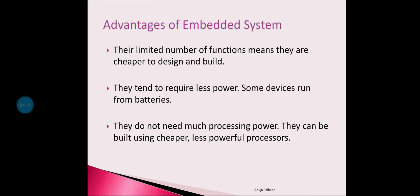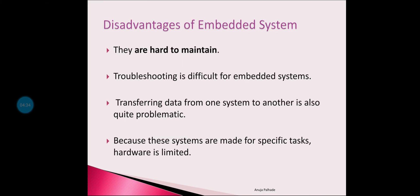Additional advantages include: embedded sensor systems have a limited number of functions, making them cheaper to design and build. These sensors tend to require less power — some devices even run from batteries. Embedded sensors do not need much processing power and can be built using cheaper, less powerful processors.